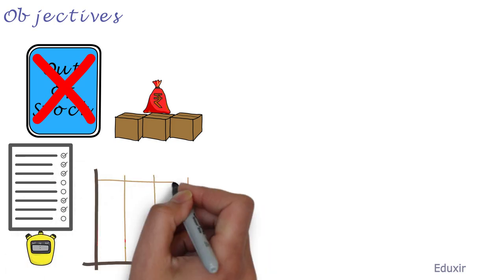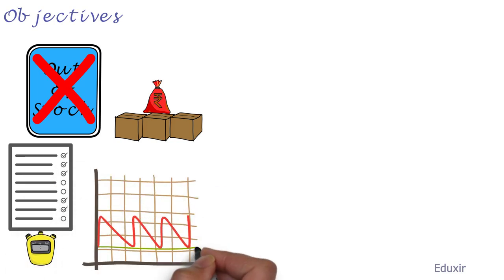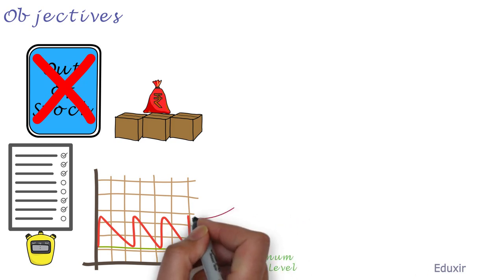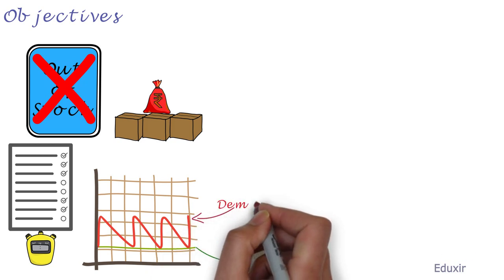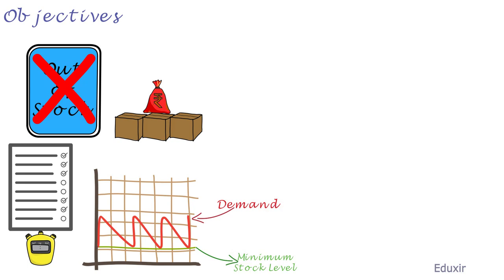Maintain safety stock levels to compensate for fluctuations in demand for the product. As shown in the chart, the stock never goes below the green line — it is always above it. As soon as the stock reaches the level represented by the green line, it is immediately replenished or refilled so that it is brought back to appropriate levels.